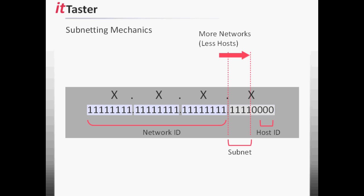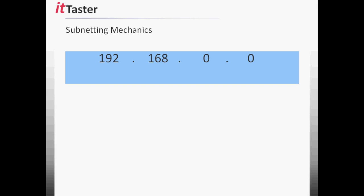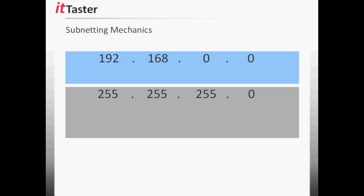So we gain more networks, i.e. subnets, but the number of possible hosts is reduced. In order to show you the basic techniques involved in subnetting, I'm going to walk you through a simple example and I'm going to use the network address 192.168.0.0 with a 24-bit subnet mask 255.255.255.0, which will allow me to keep the numbers small and easy to work with.